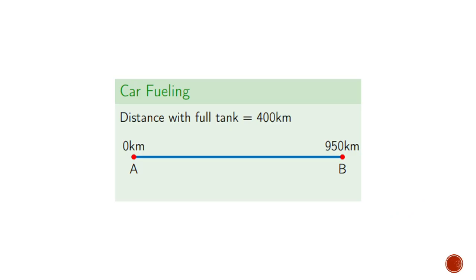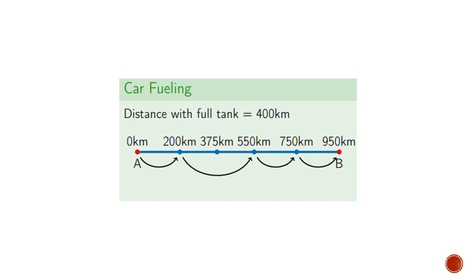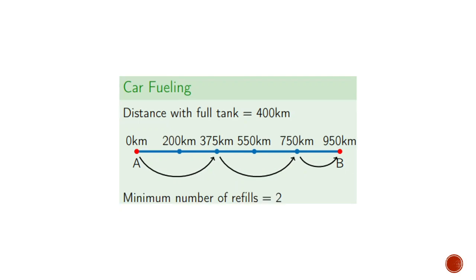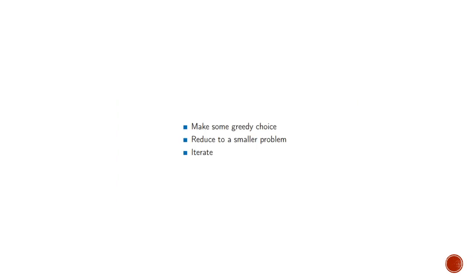Here's another example where we need to go 950 kilometers and the car can hold fuel for up to 400 kilometers. Refueling at the first station followed by random stations is one approach, but it is not optimal. The optimal way of refueling with the minimum number of refills is two stops.